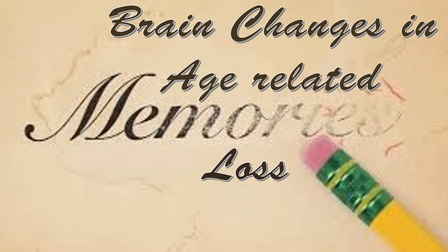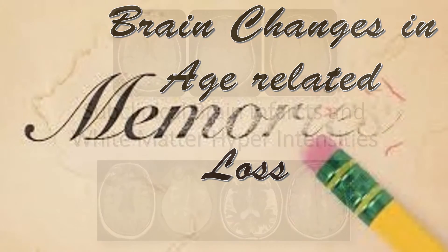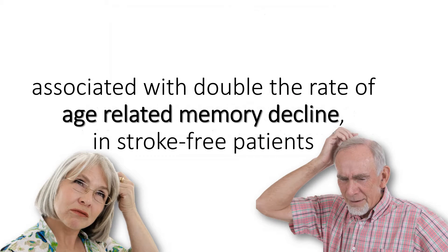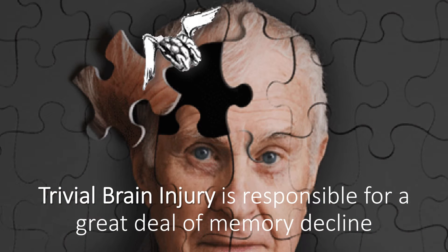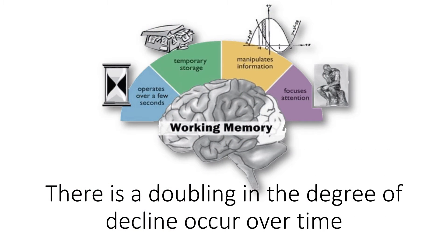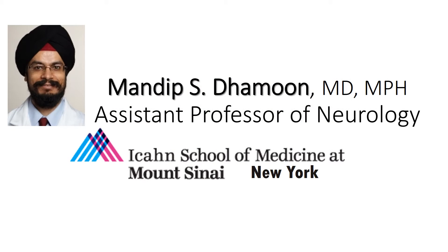Brain changes in age-related memory loss: subclinical brain infarcts and white matter hyperintensities on MRI are associated with double the rate of age-related memory decline in stroke-free patients. Trivial brain injury is responsible for a great deal of memory decline, but the degree of additional decline in the presence of subclinical brain injury is surprising — there is a doubling in the degree of decline that occurs over time.